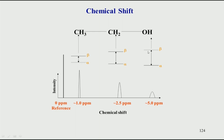Remember, omega equals gamma times V0. So if the B value changes, the omega changes, and that is converted into a chemical shift. This is a schematic drawing of ethanol.